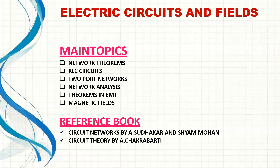RLC circuits — series resonance and parallel resonance — and the steady state and transient behavior of RLC circuits are equally important. Two-port networks covering Z-parameters and H-parameters are also key. For Electromagnetic Theory, important theorems include Gauss's Law and related magnetic field theorems. The recommended book for circuit theory is by Sarkar and Shamu, which is excellent for concept-building and problem solving.